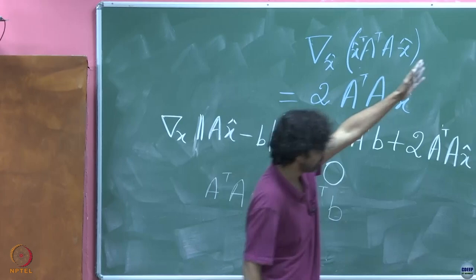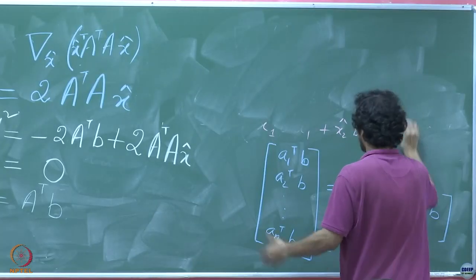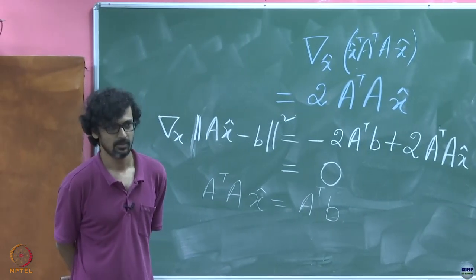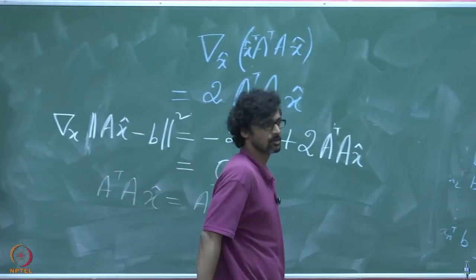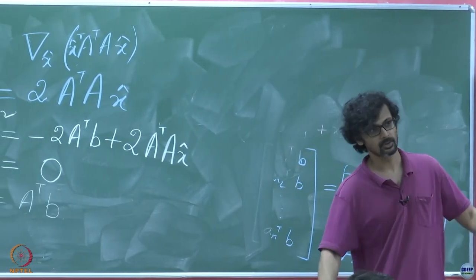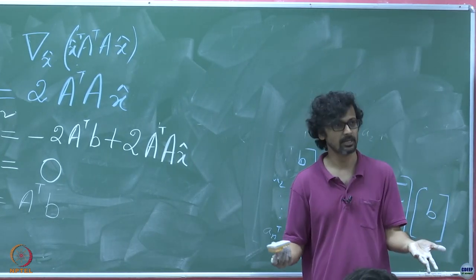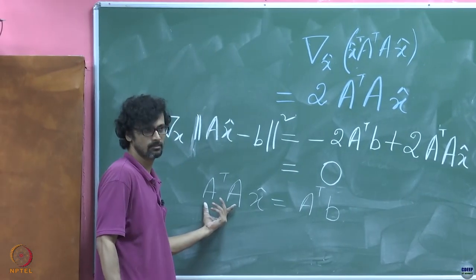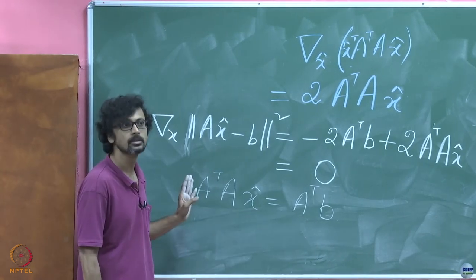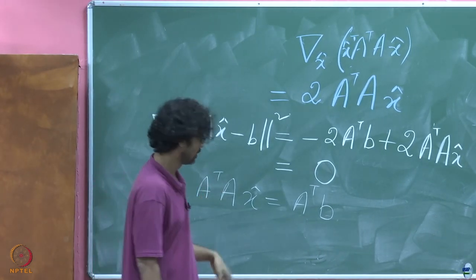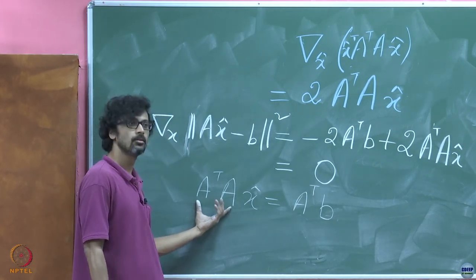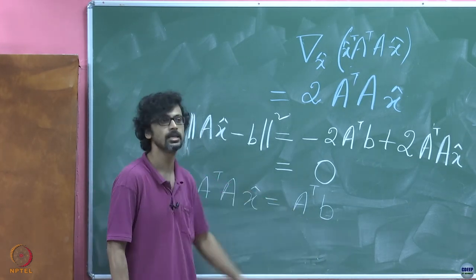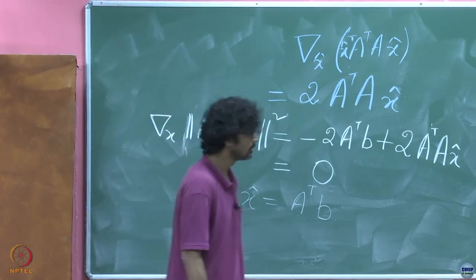Now I am going to make a claim. A^T A is a square matrix: A is m×n, so A^T is n×m, giving A^T A as n×n — a square matrix. So it makes sense to ask about the invertibility of A^T A. If it is invertible, then we readily have x̂ = (A^T A)^{-1} A^T b.